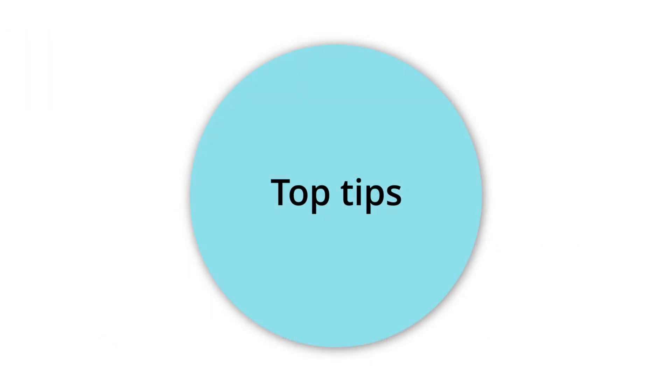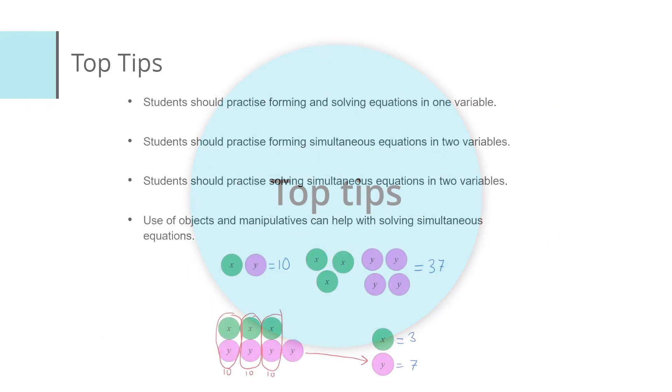So here's some tips for teaching this topic. Students should practice forming and solving equations in one variable and also forming simultaneous equations in two variables. They must practice solving simultaneous equations in two variables. If students struggle to solve simultaneous equations in two variables, they could use some objects or manipulatives to help solve these equations.